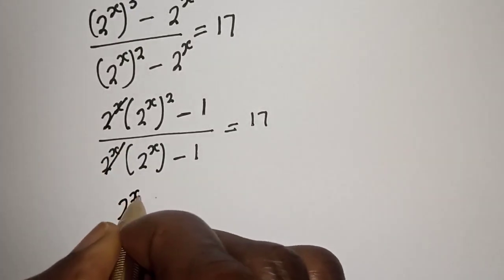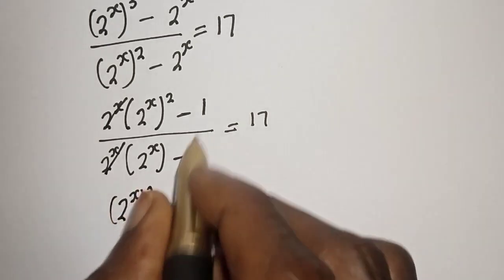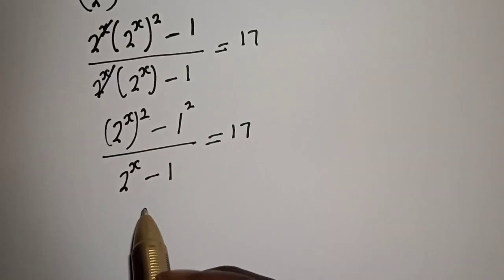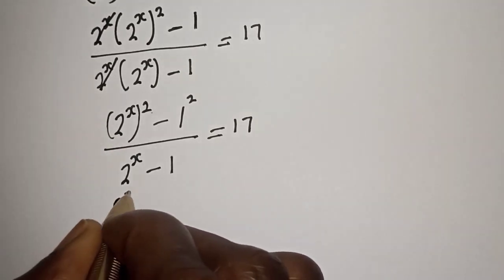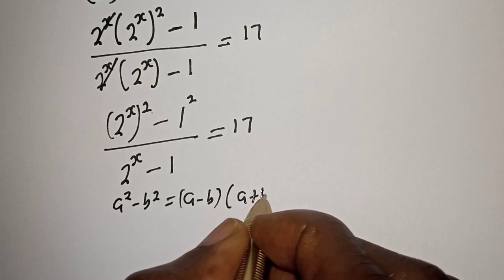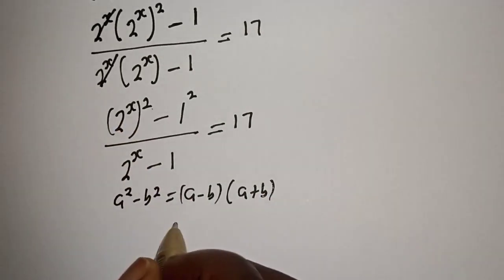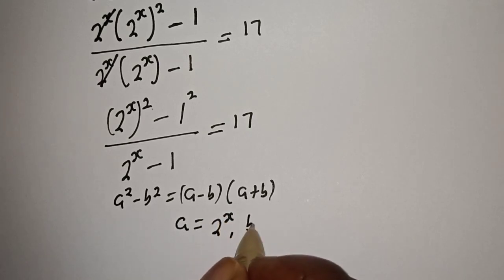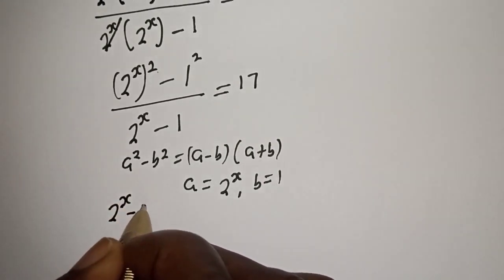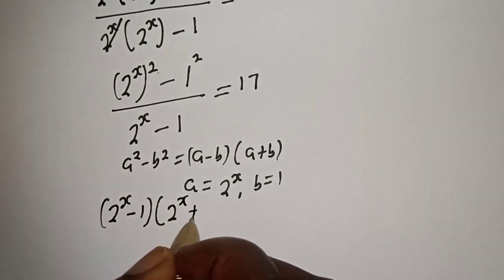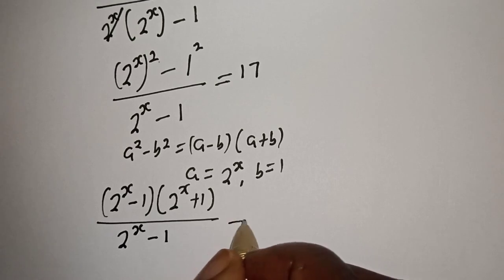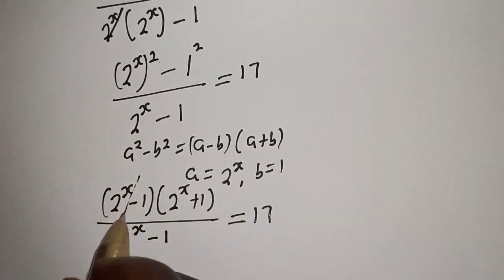We cancel the common factors. We have 2 raised to the power s squared minus 1, which is also 1 squared, over 2 raised to the power s minus 1, equals 17. Remember that a squared minus b squared equals a minus b multiplied by a plus b. Here, a equals 2 raised to the power s and b equals 1. Substituting: 2 raised to the power s minus 1, multiplied by 2 raised to the power s plus 1, divided by 2 raised to the power s minus 1, equals 17. We cancel the common factor.